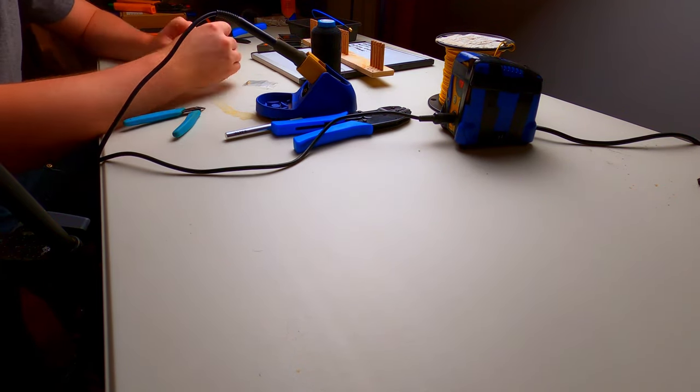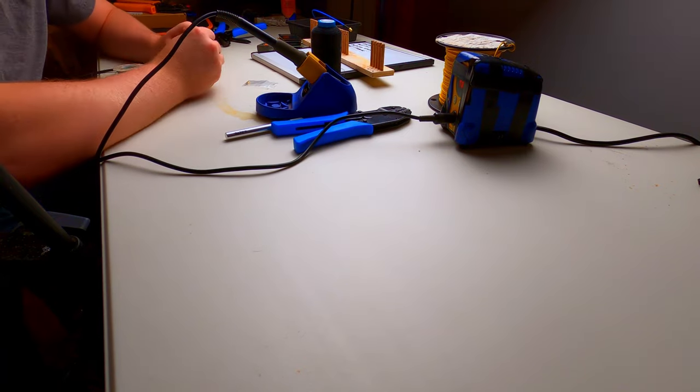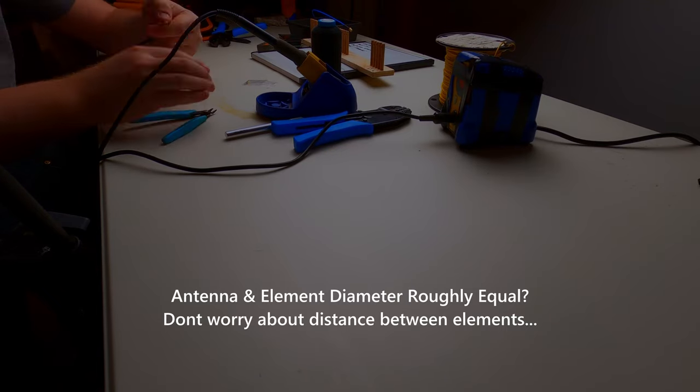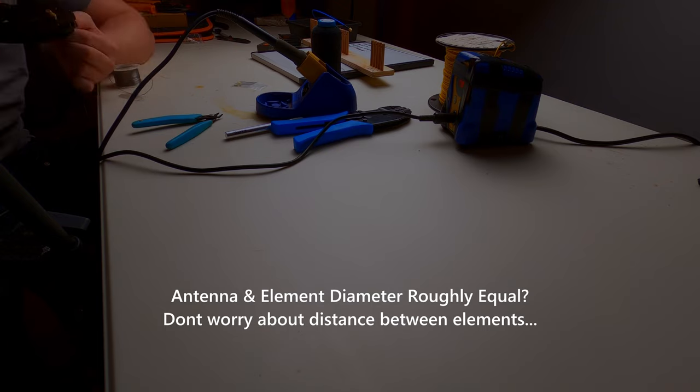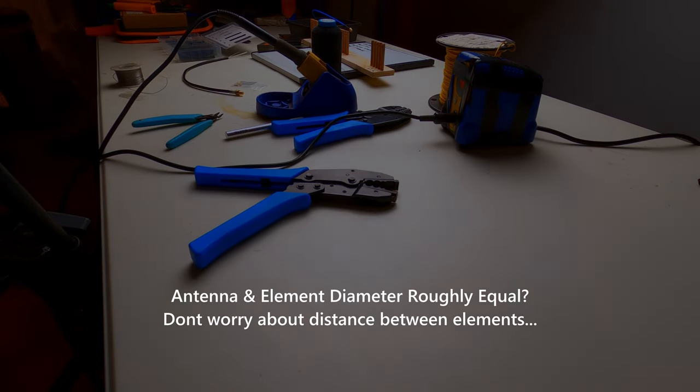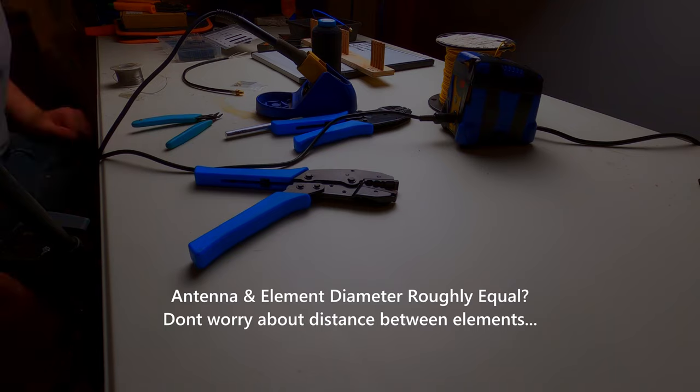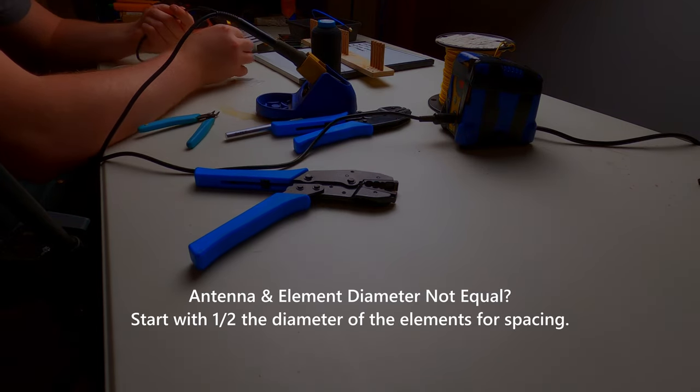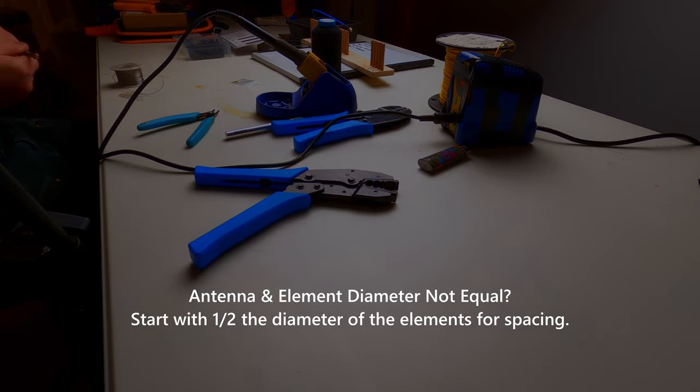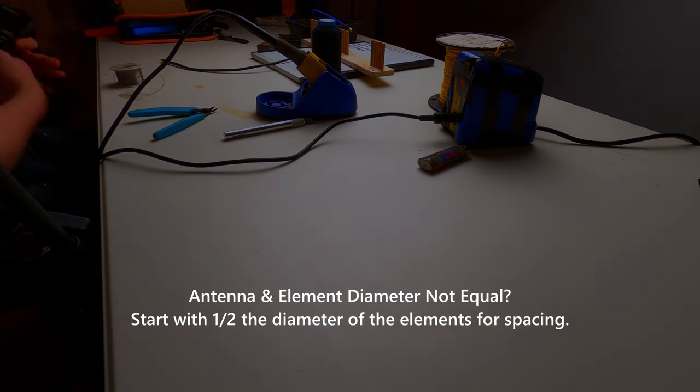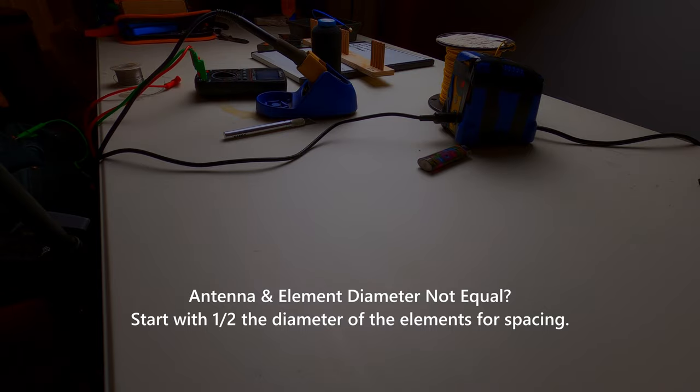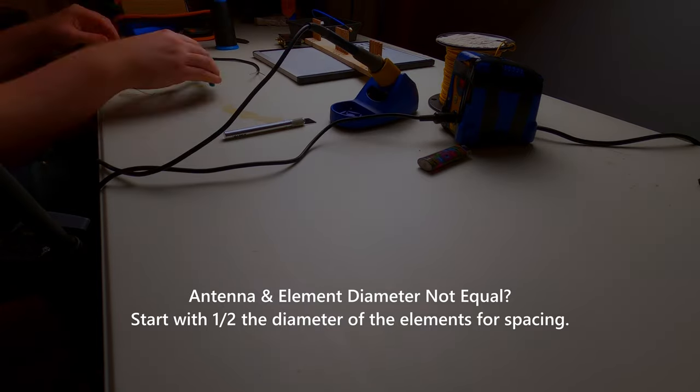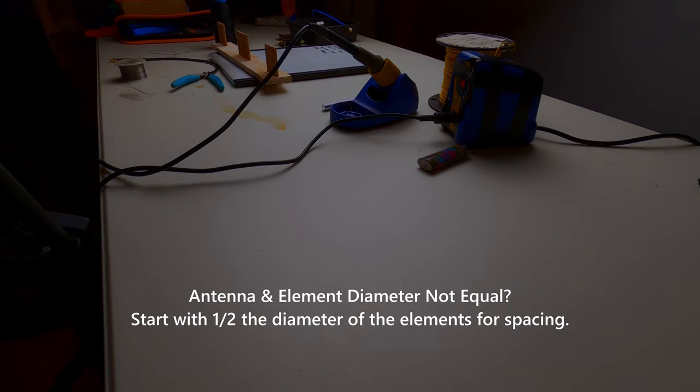First, until the antenna element diameter is larger than the coax feed wire diameter, spacing between the elements has little effect on antenna performance. When the antenna element diameter is larger than the coax, spacing is important. We found that one-half the diameter of the element gives a good balance of resistance and capacitance, should be a decent starting point. This was especially true for both the number four and the five-eighths copper pipe.